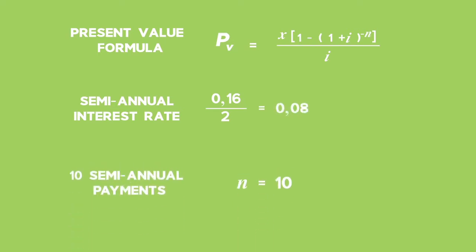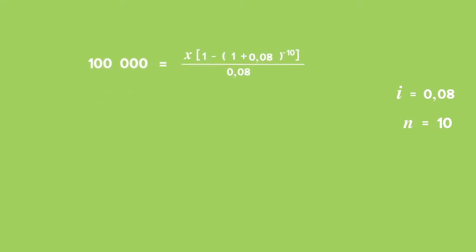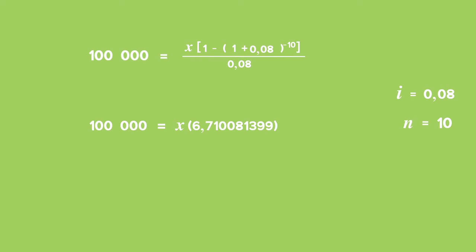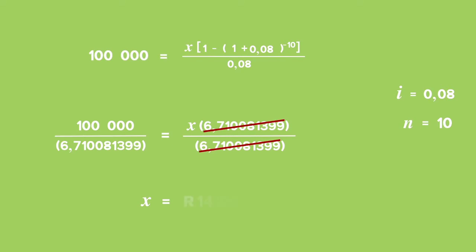n will be 10, as there are 10 semi-annual payments. Substitute values for the present value, i and n into the formula, and change the subject of the formula by dividing both sides by the fraction on the right-hand side to find x, the payment per period. x equals R14,902.95.